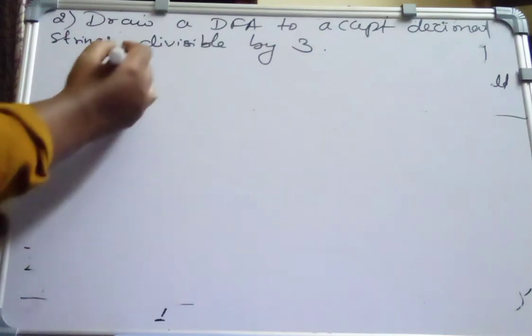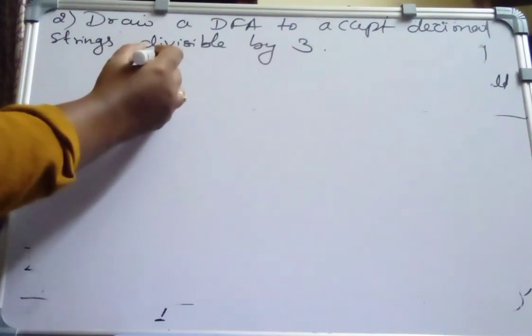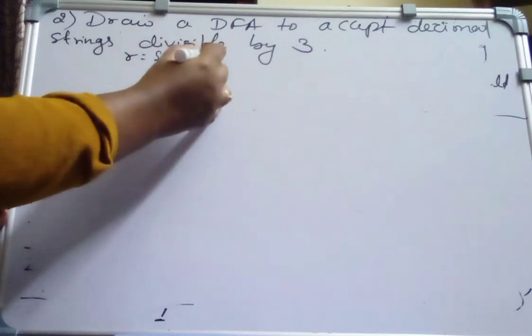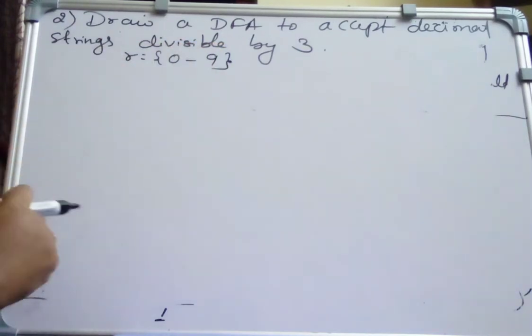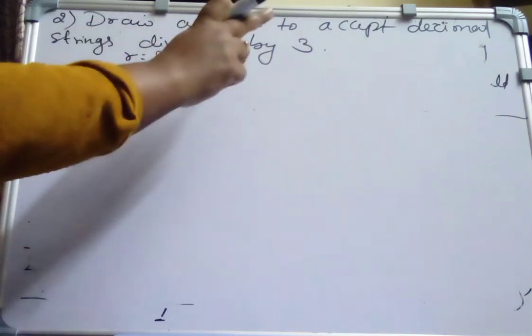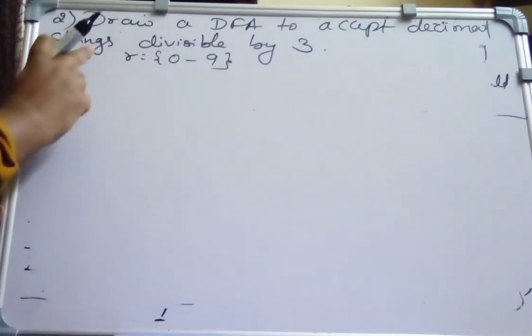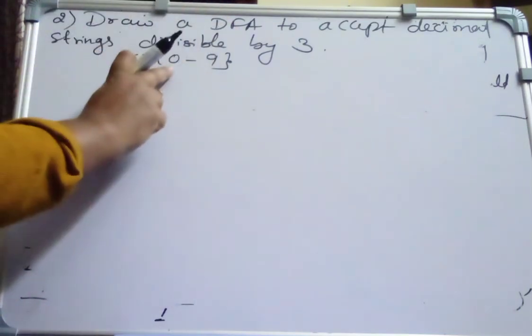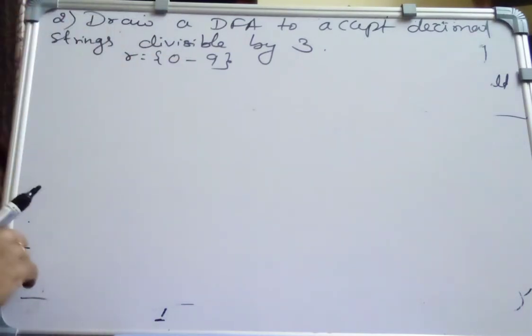So here, decimal strings divisible by 3. Then what is the radix R here? R is equal to 10. That is, starting from 0 to 9, all the digits from 0 to 9. It is decimal digits which are divisible by 3. So the numbers from 0 to 9, totally radix is of 10.